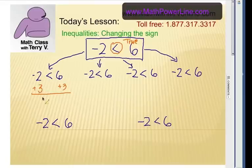So negative 2 plus 3 is a positive 1, less than, let's just drop this down and see what happens, 6 plus 3 is 9. Now, is that still true? 1 is less than 9? Yes. So the inequality property is true.